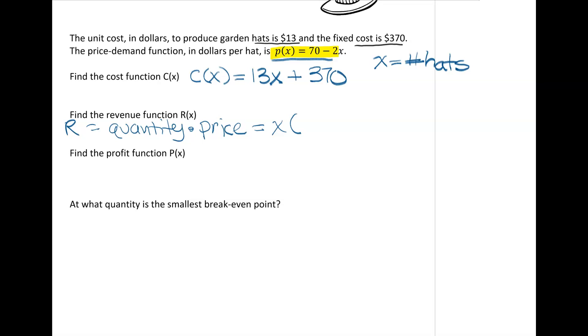If we take x and multiply that by (70 - 2x), then what we'll come up with is 70x - 2x², and that will be our revenue function.